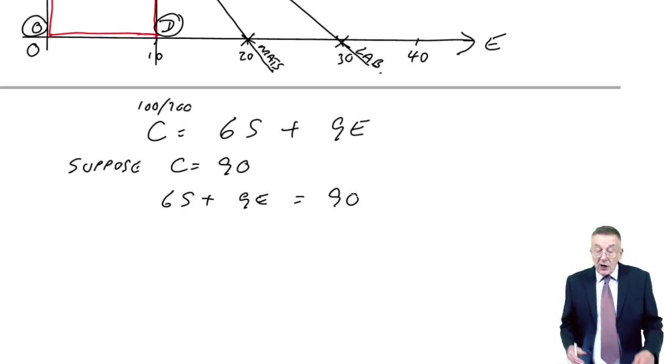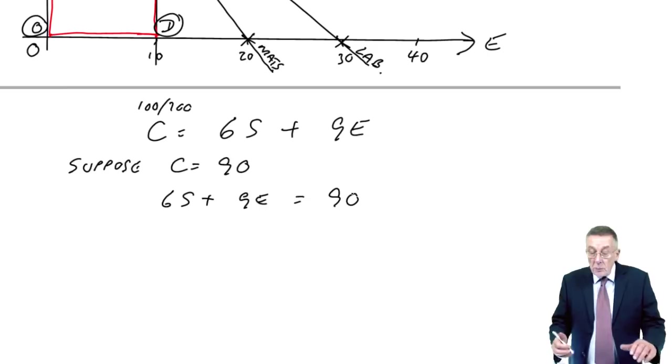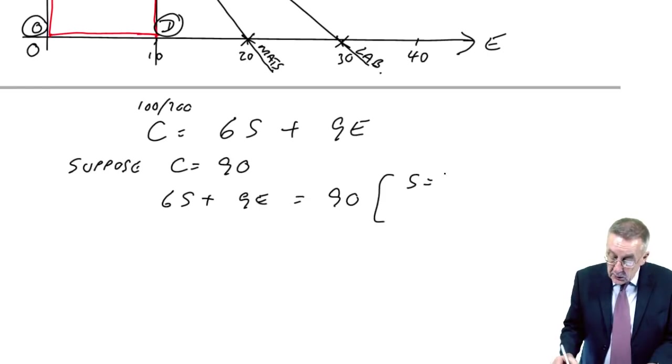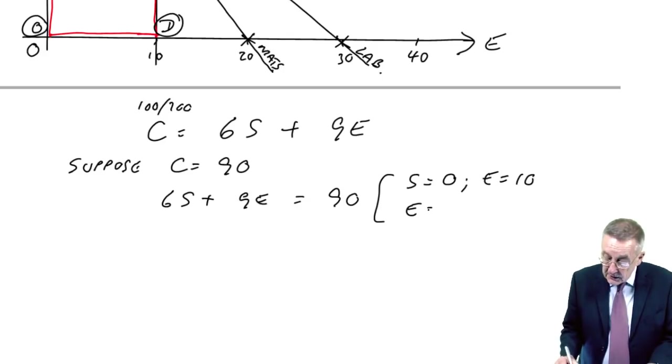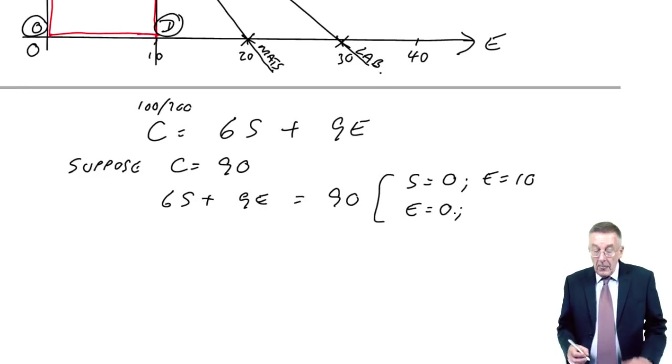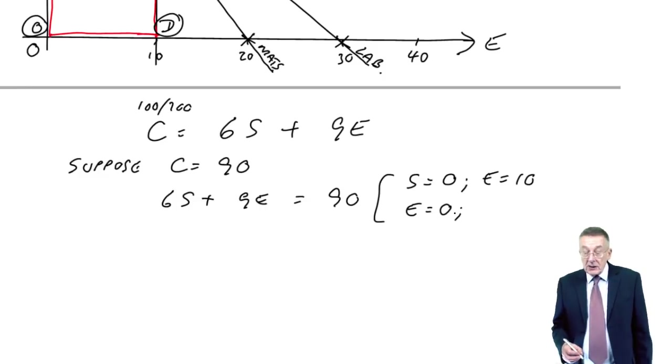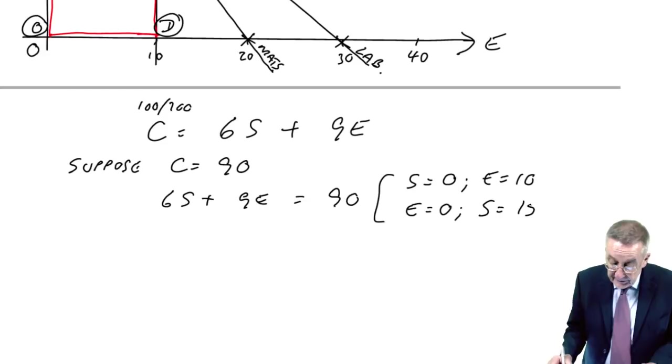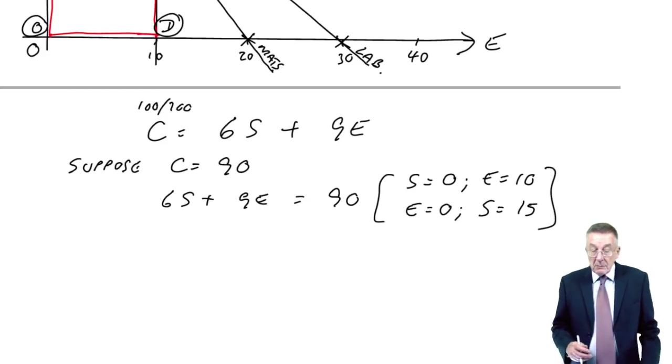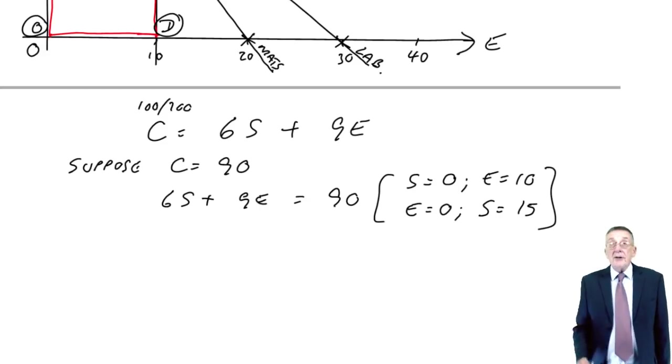And again, that's a straight line on the graph. To define a line, if s were equal to 0, 9e is 90, e would be 10. If e was equal to 0, 6s would be equal to 90, s would be equal to 15.